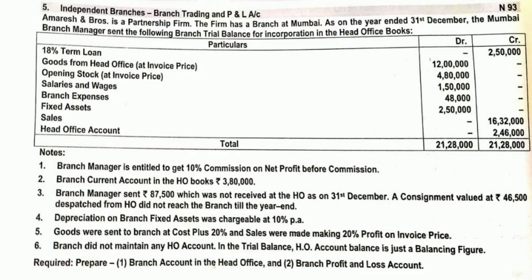Today we are going to solve one important problem: preparing trading and profit and loss account. It is an important question that has been asked in previous years. Amrish and Brothers is a partnership firm with a branch at Mumbai. As on the year end of 31st December, the Mumbai branch manager sent the following branch trial balance for incorporation in the head office book — meaning this is an independent branch trial balance.